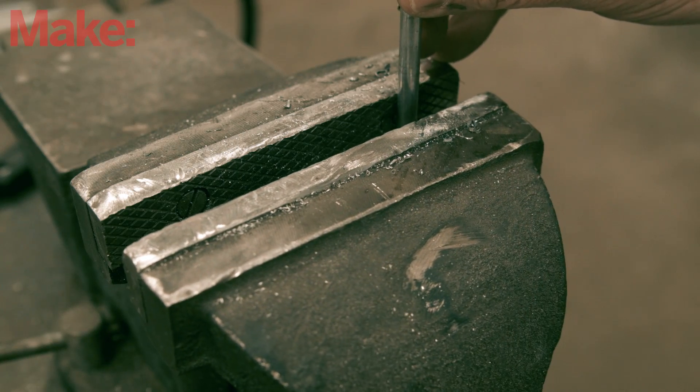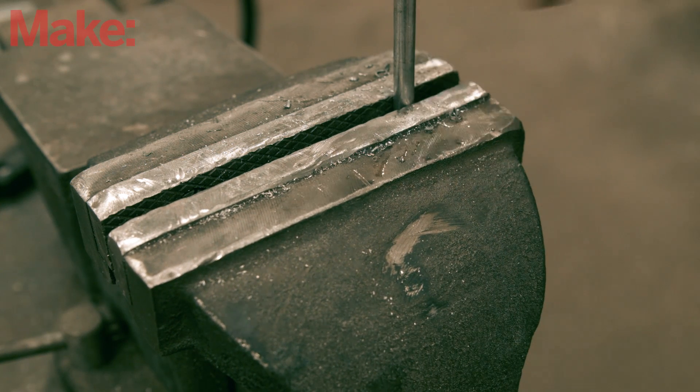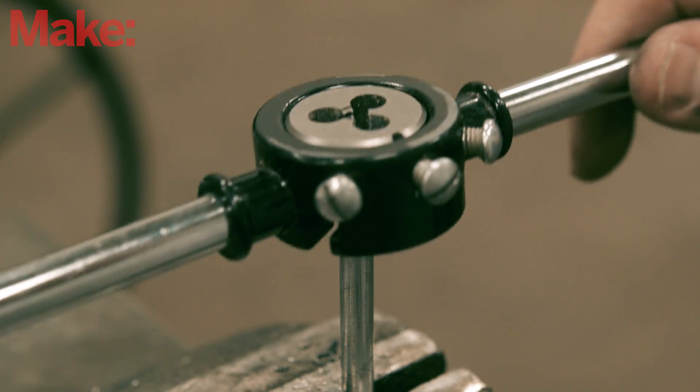Rather than try and spin the rod onto the die, we'll spin the die onto the rod. That means that the rod will have to be held securely, ideally in a vice. This also keeps the rod straight while spinning the die onto the end.